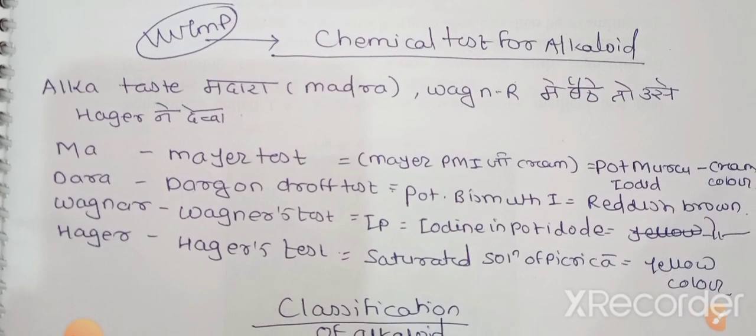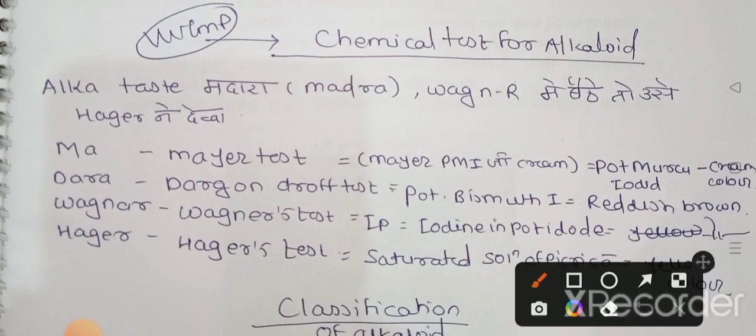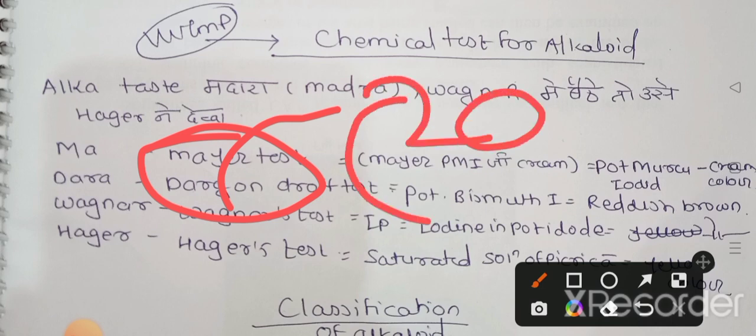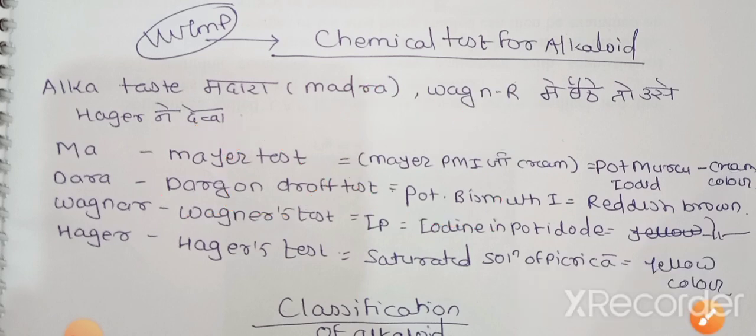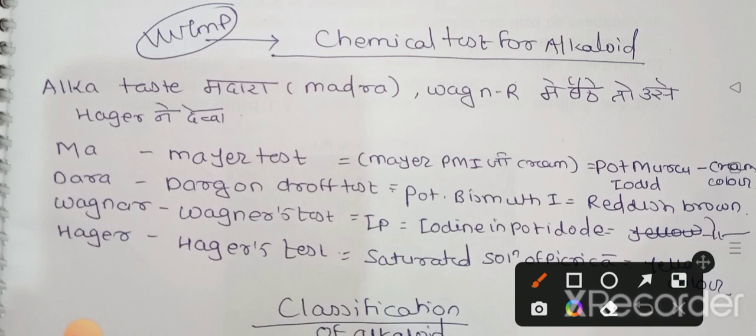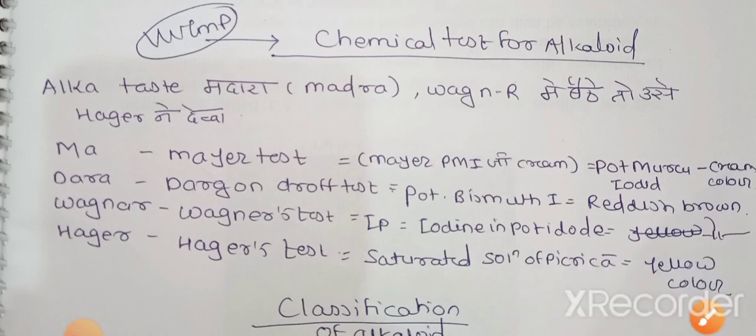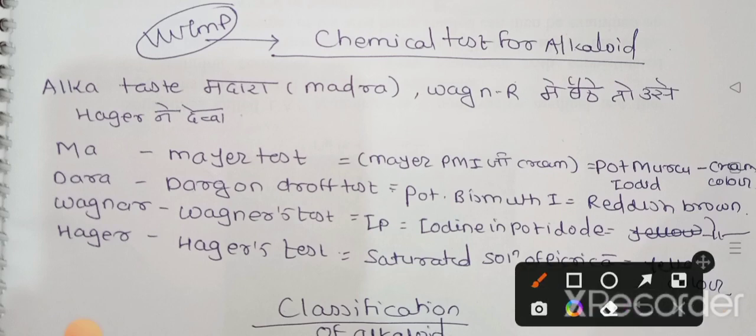Dragon drop test uses potassium bismuth iodide. You can remember dragon has 20 mouths, so bismuth - that is potassium bismuth iodide. This is the reagent in Dragon drop test. So in Meers test, Meers sahab was feeding cream to Pammi, so potassium mercuric iodide. After that, dragon with 20 mouths means bismuth. And what color? Dragon breathes fire from its mouth, red color fire, so it gives reddish brown color in Dragon drop test.